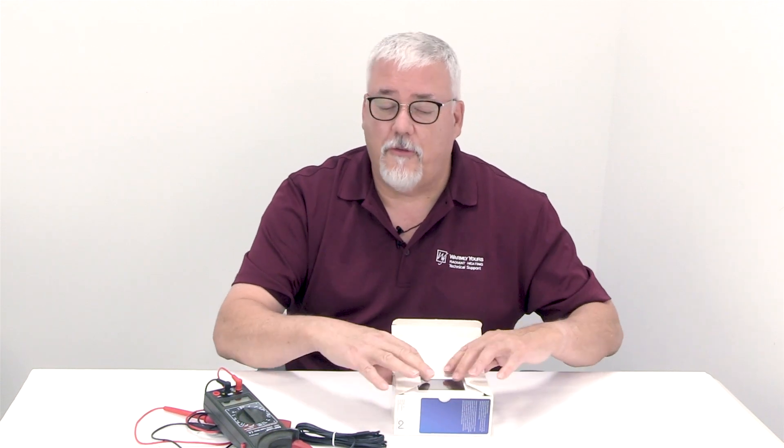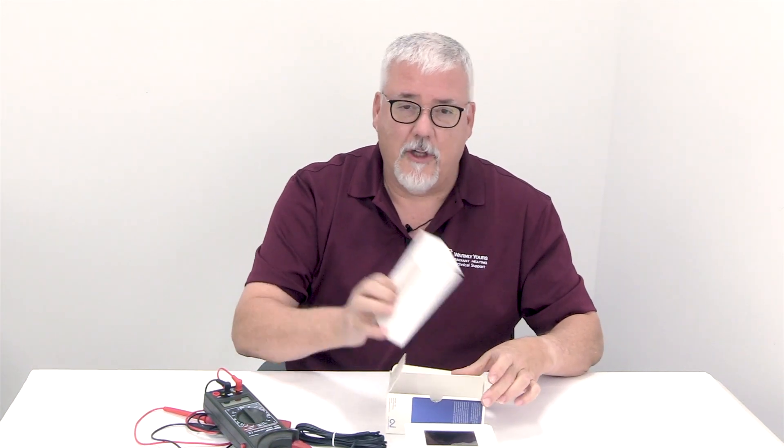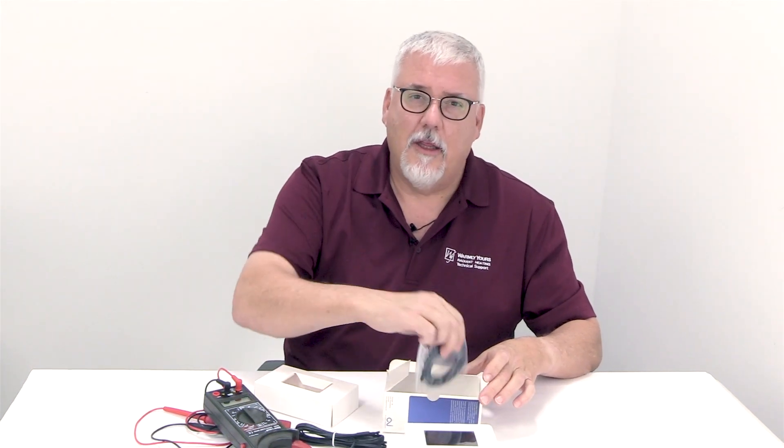So let's take a look at this box. Inside this box is where your floor sensor is located. Don't forget to put the floor sensor in the floor. So to find your floor sensor, open up the thermostat box, take the thermostat out, take the filler card out, and in the back of the box will be this floor sensor.